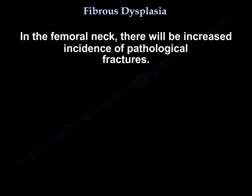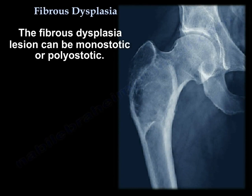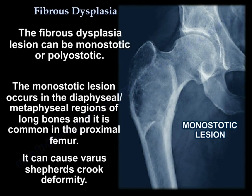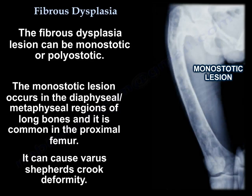The lesion can be monostotic or polyostotic. The monostotic form involves the physeal-metaphyseal regions of long bones, most commonly the proximal femur. It can cause the classic shepherd's crook deformity.